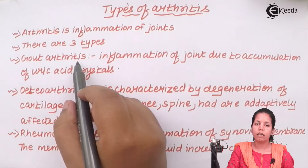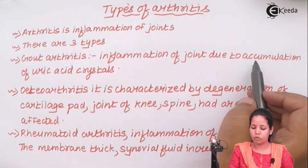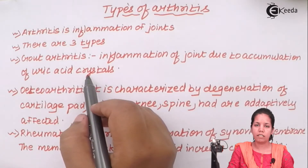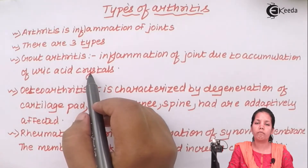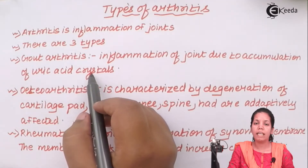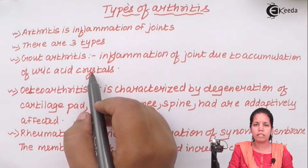The first one is Gout Arthritis. Gout arthritis is caused by the accumulation of uric acid crystals in your body. If the amount of uric acid increases beyond a permissible limit, it may lead to this kind of arthritis. Uric acid is a by-product of excretion metabolism and must be removed from the body. A common symptom is an enlarged, painful big toe, which is a sign of gout arthritis.